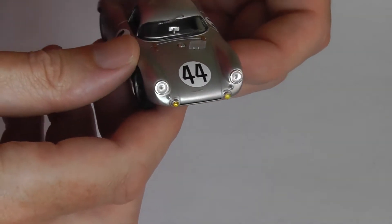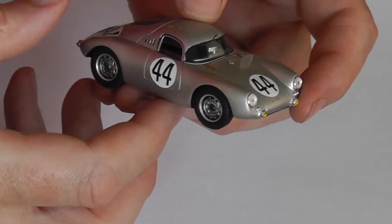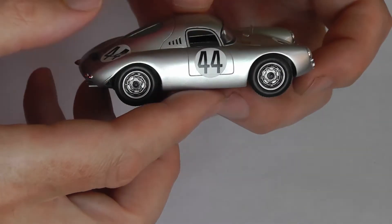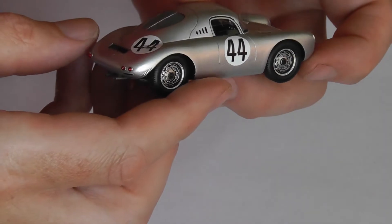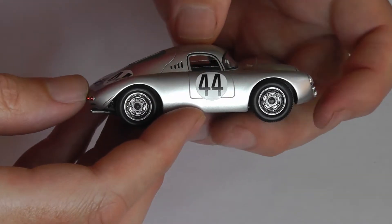Right, so a dash mounted rear view mirror, cockpit ventilation on the side there. So quite an aerodynamic shape of course.